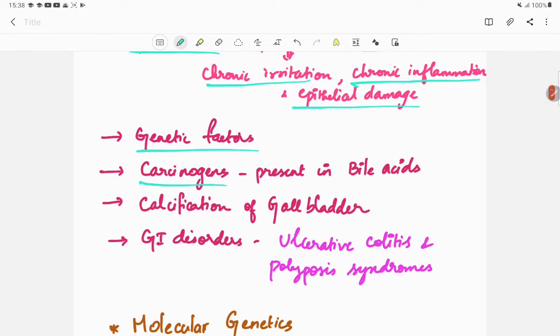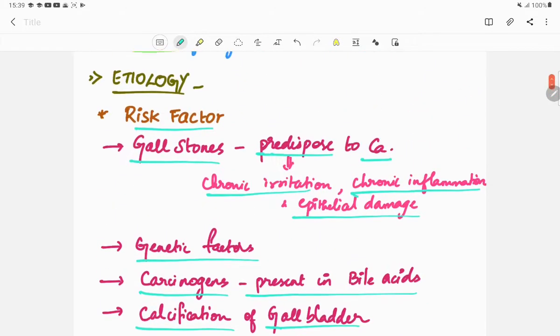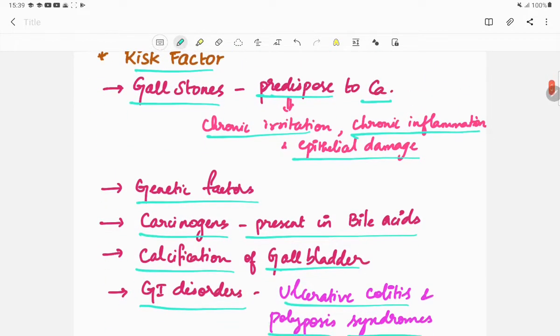Next are the carcinogens present in bile acids, then the calcification of gallbladder, GI disorders like ulcerative colitis and polyposis syndromes. These are all the risk factors of gallbladder carcinoma.